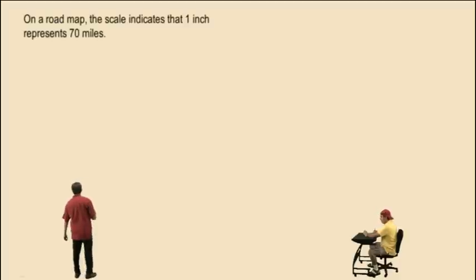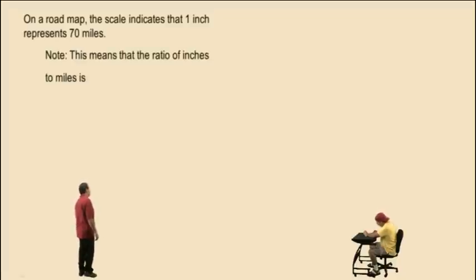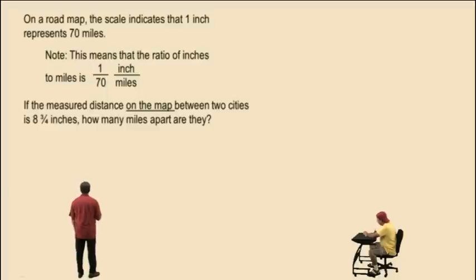Let's do another one. On a road map. This is a paper road map. The scale indicates that 1 inch represents 70 miles. This means that the ratio of inches to miles is 1 inch per 70 miles. That's on the road map. If the measured distance on the map between two cities is 8 and 3 quarters inches, how many miles apart are they? Note, 8 and 3 quarters inches is equal to 8.75.